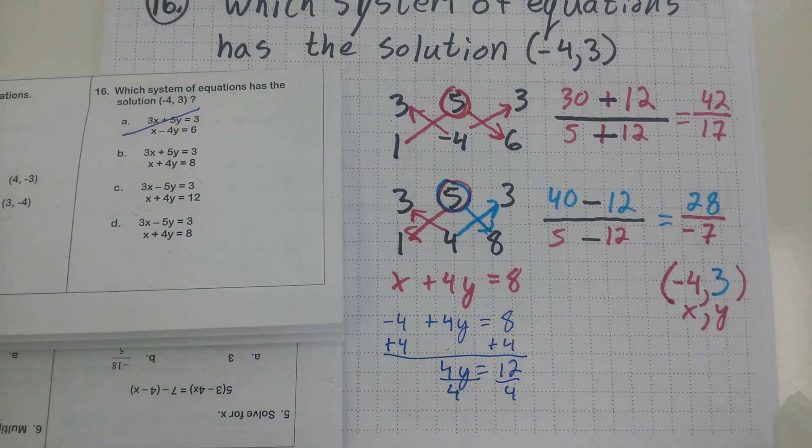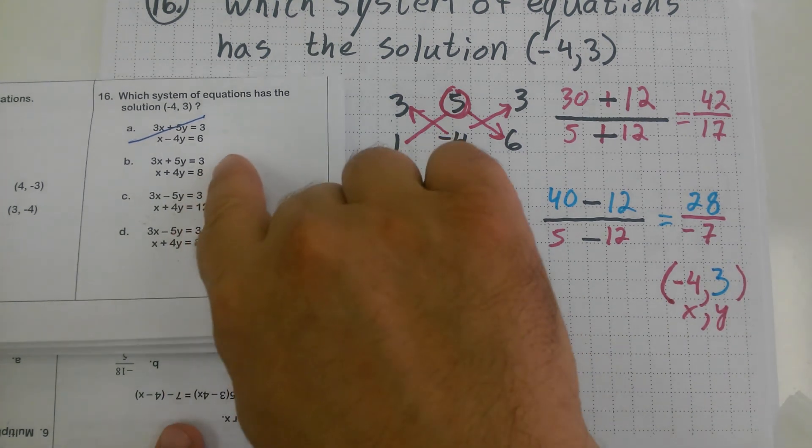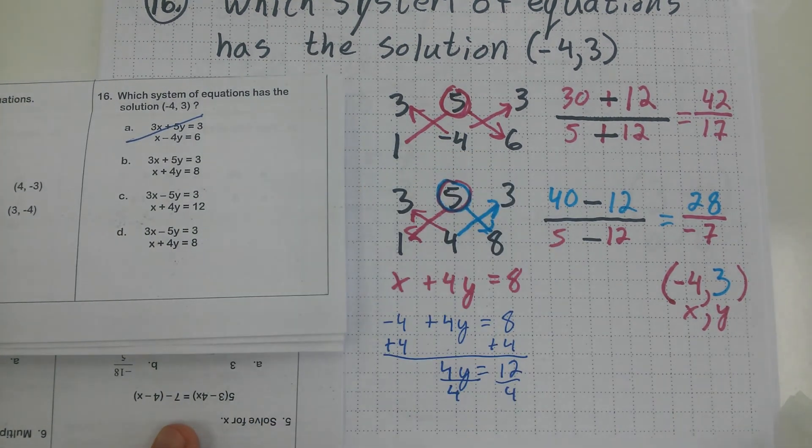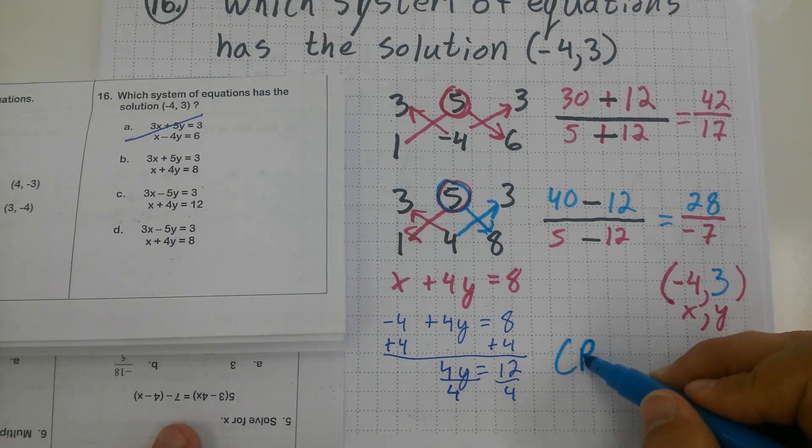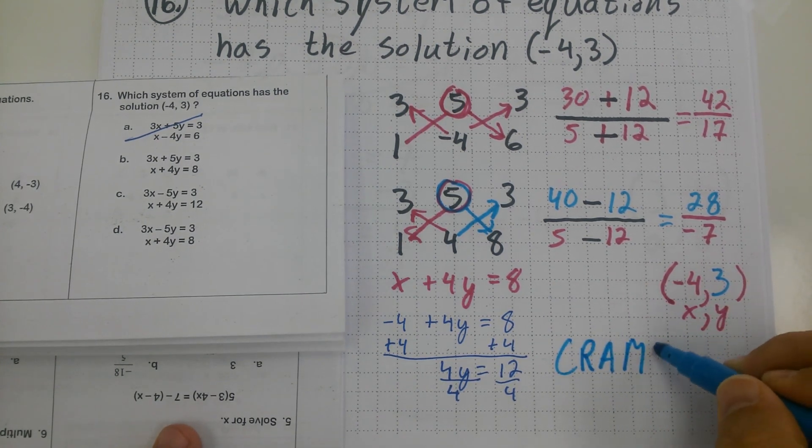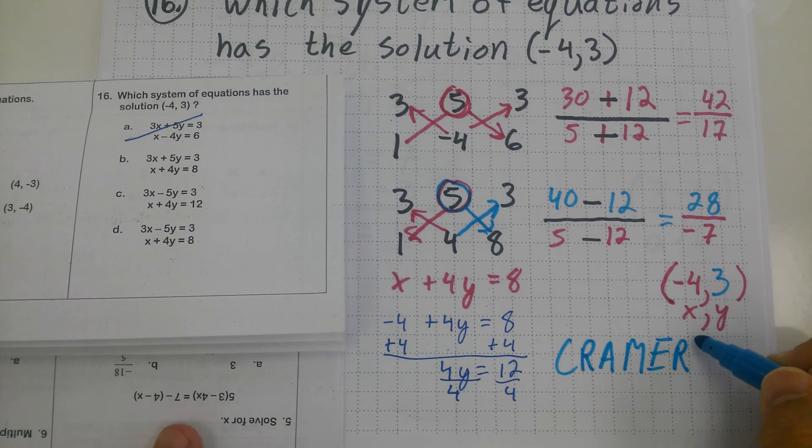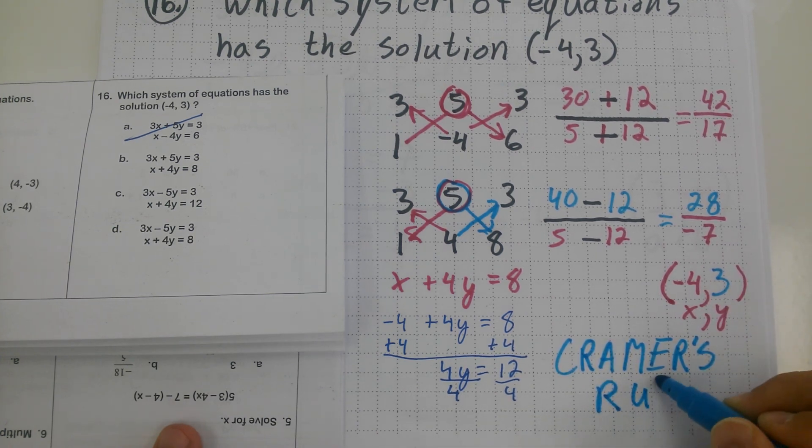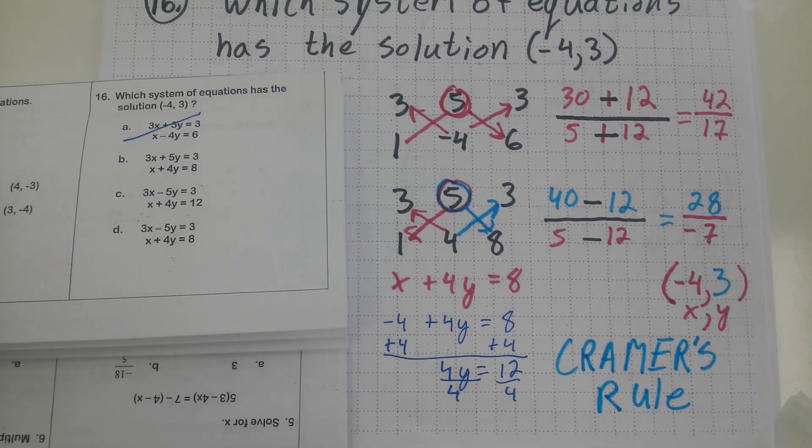So for this question, the answer is choice B. And I did it by using Kramer's rule. I'll see you next time.